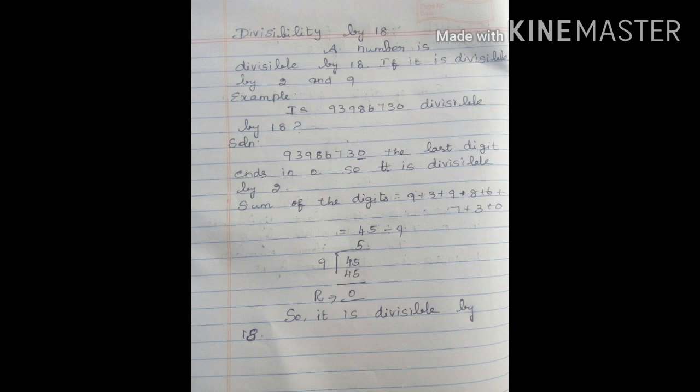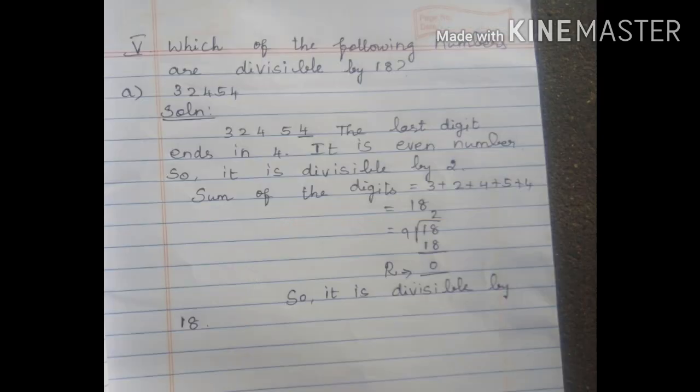So it is divisible by 2. Next, check rule 9: find the sum of the digits and divide by 9. 9 plus 3 plus 9 plus 8 plus 6 plus 7 plus 3 plus 0 equals 45. 45 divided by 9 equals 5, remainder is 0. So it is divisible by 9. Therefore, the above number 93986730 is divisible by 18.